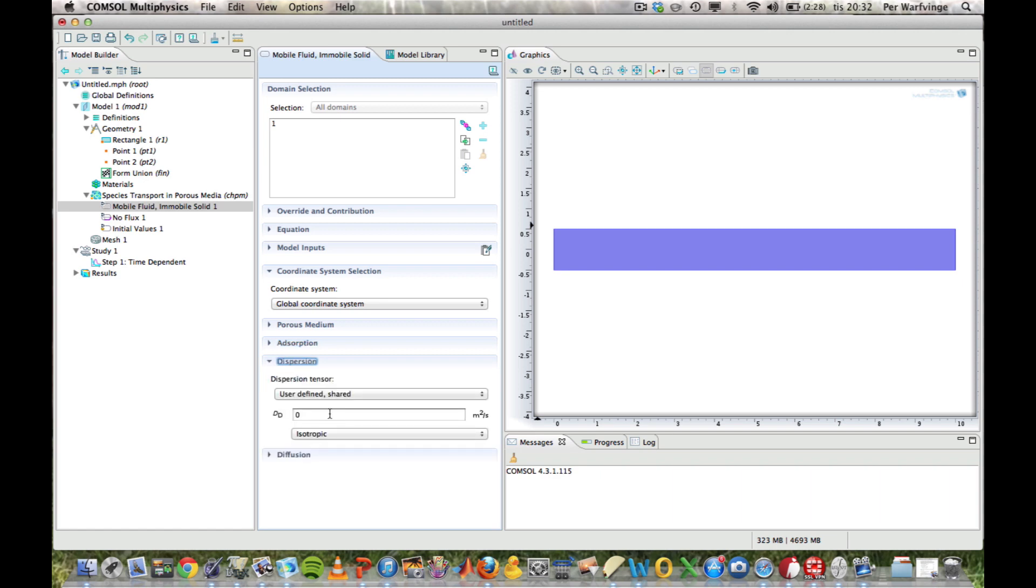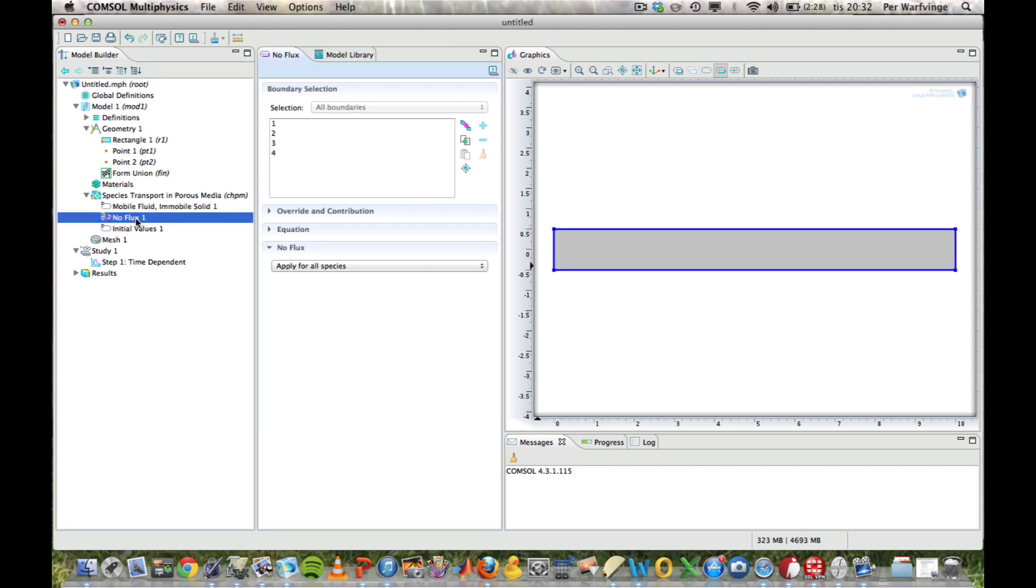And when it comes to dispersion, the dispersion coefficient is 1. Those were the parameters. Now, we have to define the various boundaries. And it assumes there is no flux at the various boundaries. All four boundaries are by default set to no flux. But we want to define the concentration right here, to the left.